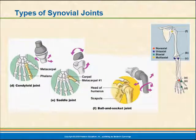Condyloid joints allow movement in two different directions. It's an oval-shaped structure — like an egg in an oval-shaped cup — that allows movement in two planes. Not only can our hands grip, but we can also spread our fingers apart. This condyloid joint occurs at the first phalange and the metacarpals of the hand.